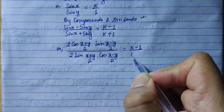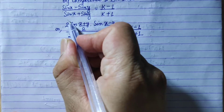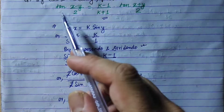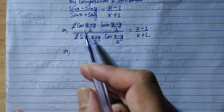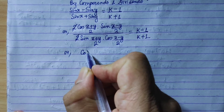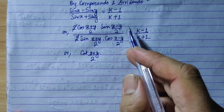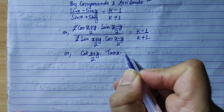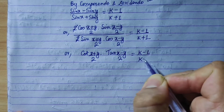Applying these formulas, the numerator sin x minus sin y becomes 2 cos of (x plus y)/2 times sin of (x minus y)/2, and the denominator sin x plus sin y becomes 2 sin of (x plus y)/2 times cos of (x minus y)/2. This gives us sin of (x plus y)/2 over cos of (x minus y)/2, leading to tan of (x minus y) by 2 equals (k minus 1) by (k plus 1).